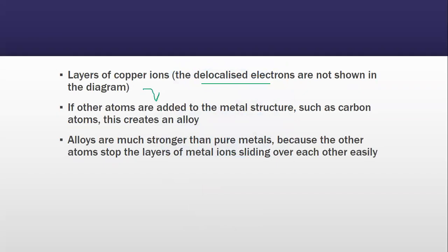If other atoms are added to the metal structure, such as carbon atoms, this creates an alloy. Alloys are much stronger than pure metals because the other atoms stop the layers of metal ions sliding over each other easily.